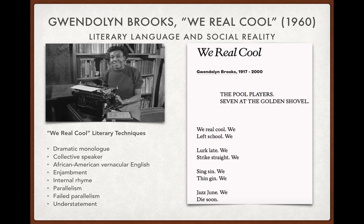There's a tragic quality to the poem: their flight from normative culture is suggested to end poorly — 'we die soon.' By being excluded from and resisting dominant culture, by belonging to a stigmatized, marked group, they are put in danger. Now, looking at specific verbal techniques: the poem uses enjambment heavily. Instead of ending each sentence on a line break, Brooks places the next 'we' at the end of the previous line — 'We real cool. We / Left school. We / Lurk late.' This creates a sense of energy.